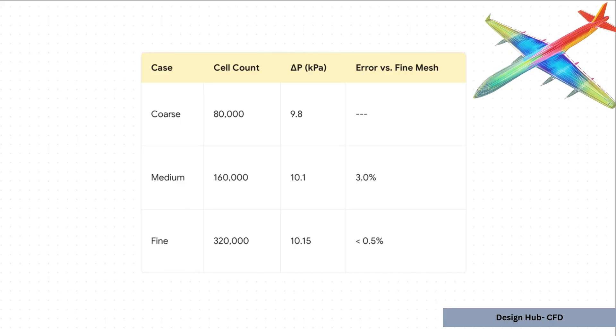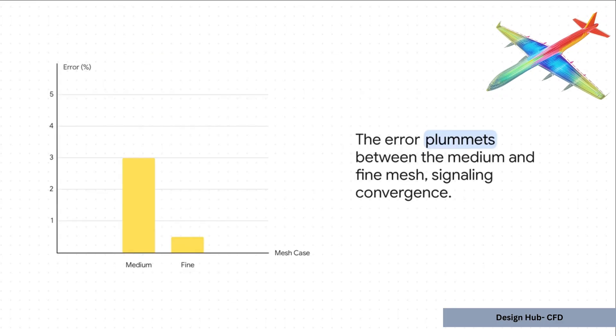But now look what happens when we double it again. The result barely even budges, changing by less than half a percent. And visually, this chart just makes it crystal clear. You see that error just plummet between the medium and the fine mesh?